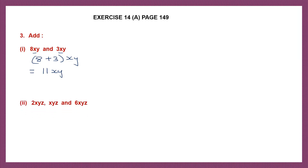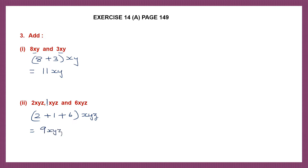Question 2: 2xyz, xyz, and 6xyz. Now they're all like terms, so we can add them together. Here let's put 1 for the second term, so this is going to be 1xyz. Let's add only the numbers: 2 plus 1 plus 6xyz. 2 plus 1 is 3, 3 plus 6 is 9. So that is 9xyz.